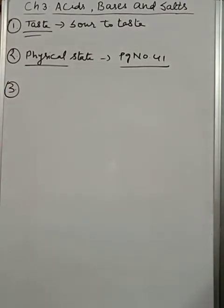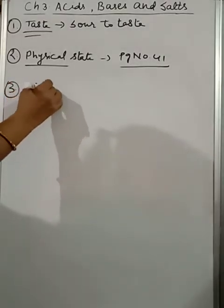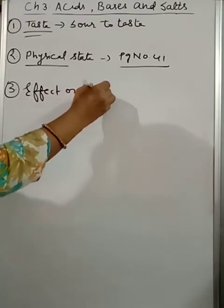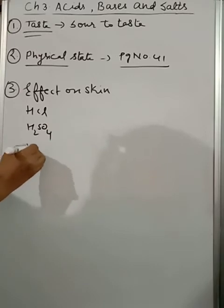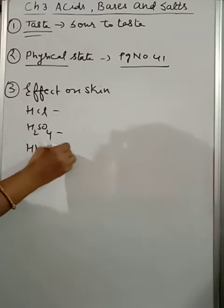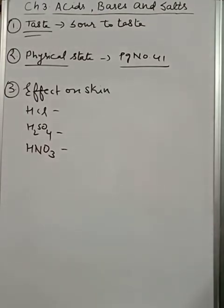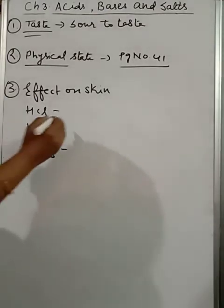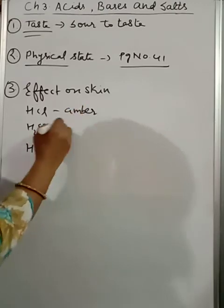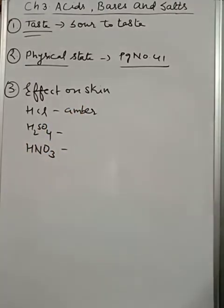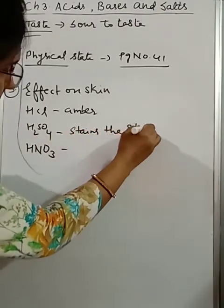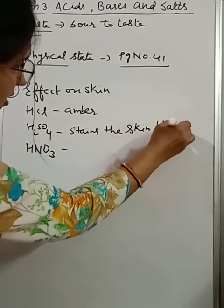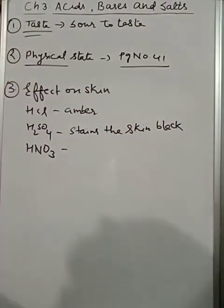Now third point is: what about the effect on skin? Being highly corrosive in nature, especially the mineral acids like HCl, H2SO4, and HNO3. If by mistake falling on any body part, it changes the color of the skin. HCl will provide you amber color, it will change the color to amber color. H2SO4 turns black, it stains the skin black. And what about HNO3? In case of HNO3, that body part becomes yellow.